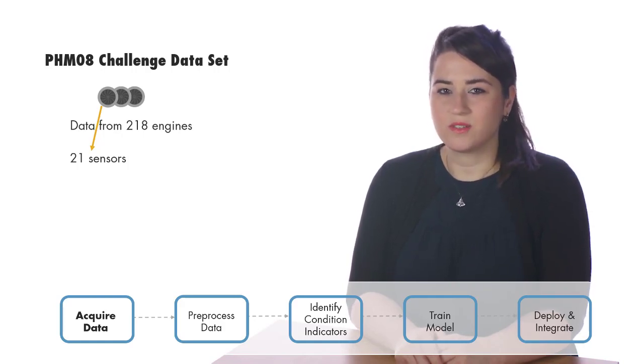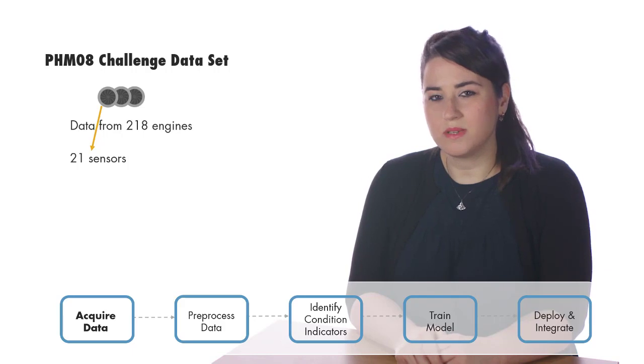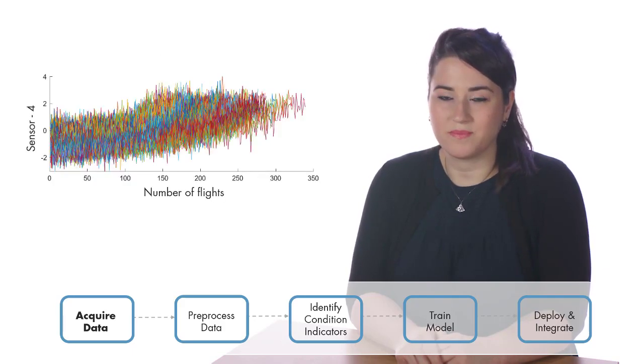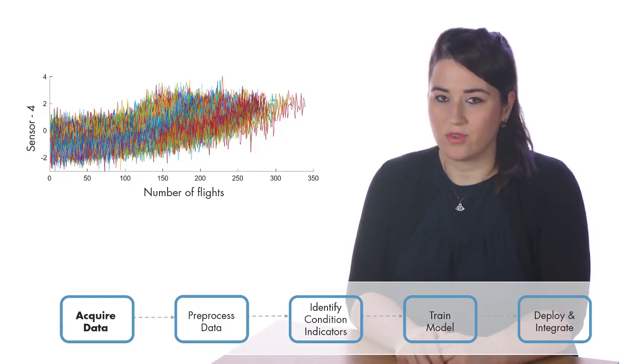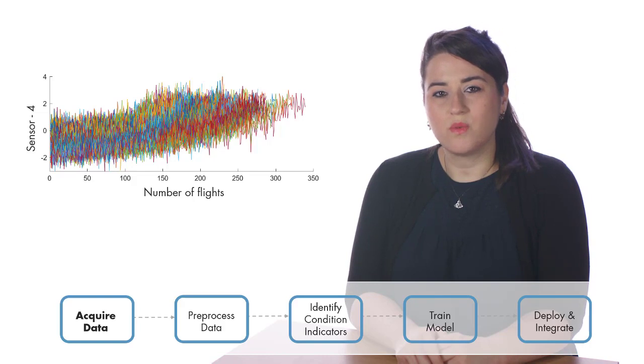These are sensors such as field flow, temperature, and pressure that are placed in various locations in the engine to provide measurements to the control system and monitor the engine's health. Here is how one of these sensor measurements looks like for all the engines. On the plot, the X axis shows the number of cycles or flights, whereas the Y values represent the average sensor values at each flight.